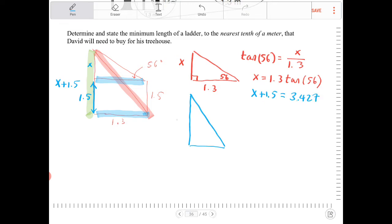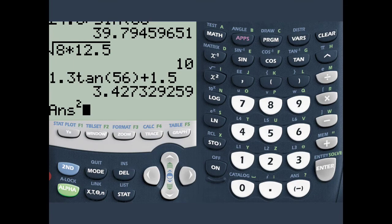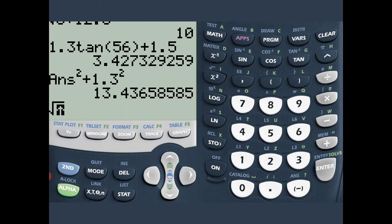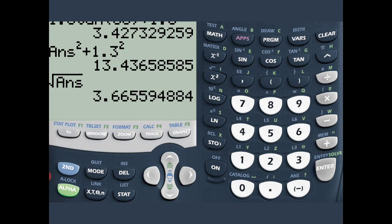Is the length of, is the height of that triangle there, and then I have 1.3. And now I can find out what the hypotenuse is by using Pythagorean theorem. So that would be 3.427 squared plus 1.3 squared, and take the square root of that. I'm just going to square the answer I had before, plus 1.3 squared. And I want to take the square root of everything. That would be 3.665.